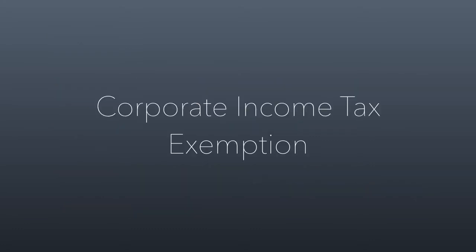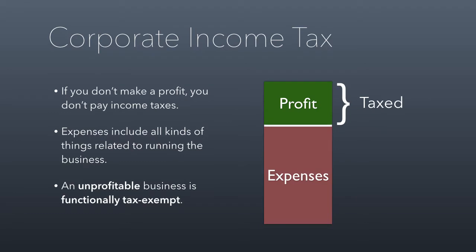Let's talk about the corporate income tax exemption. This is how corporate income taxes work. If you look at the graphic on the right-hand side, every corporation makes money — that's represented by the height of my graphic, so the whole thing is the amount of money the organization brought in. But then in the course of making money, corporations also spend money. Those are called expenses. And as long as they're legitimate business expenses, the IRS doesn't actually tax them. The only thing that a corporation pays taxes on is its profit — its income above expenses. That's what's taxable under our corporate tax code.